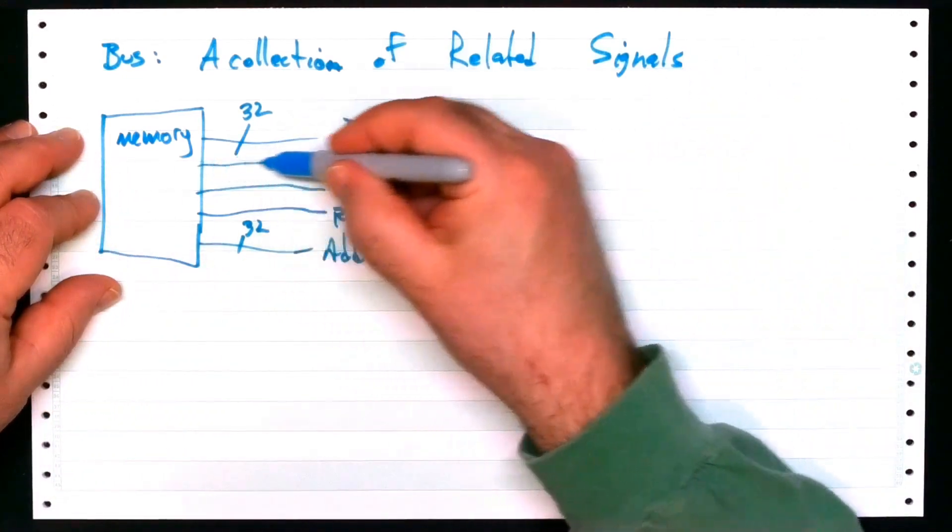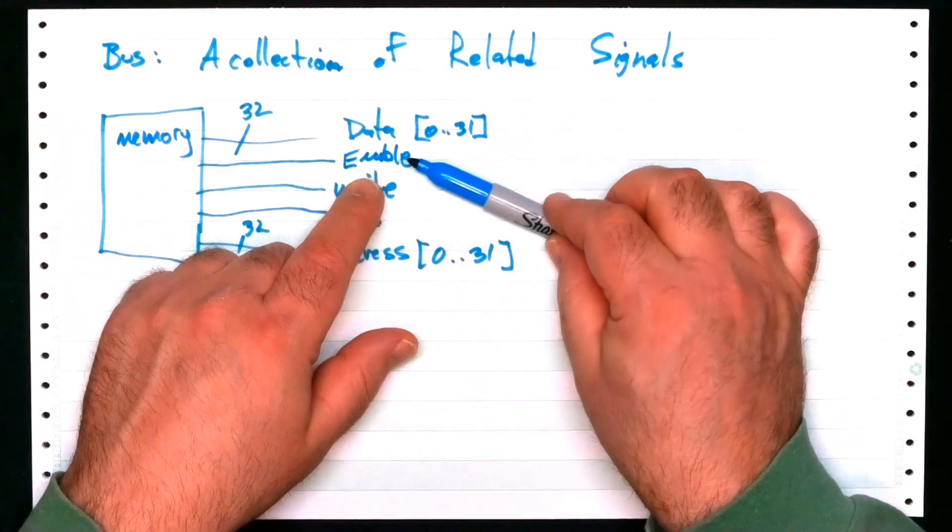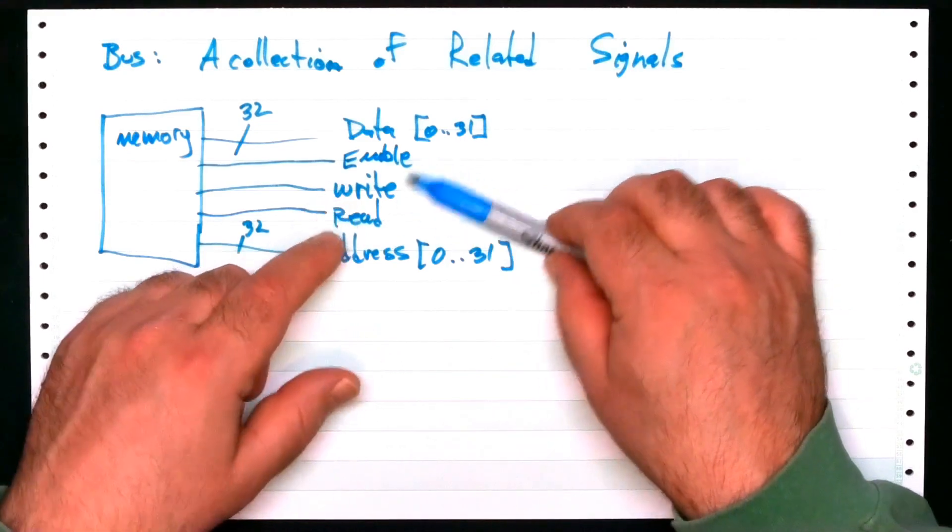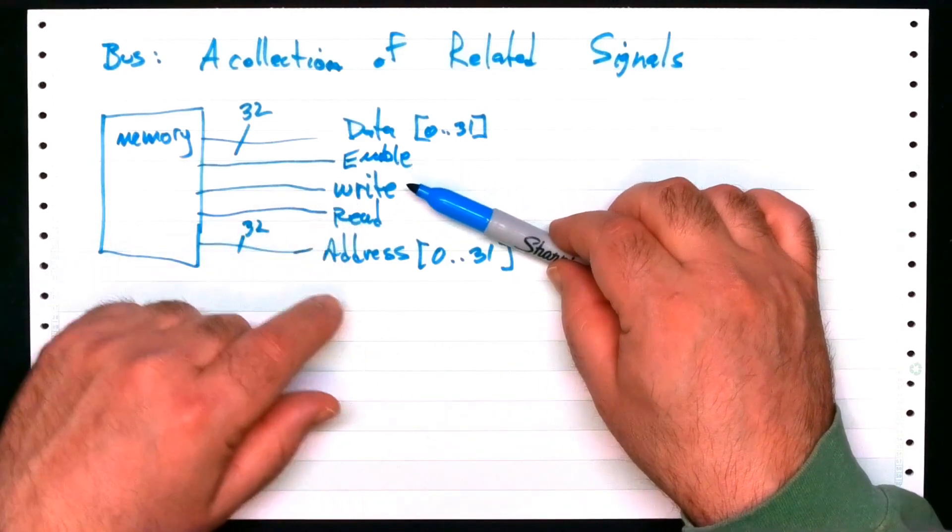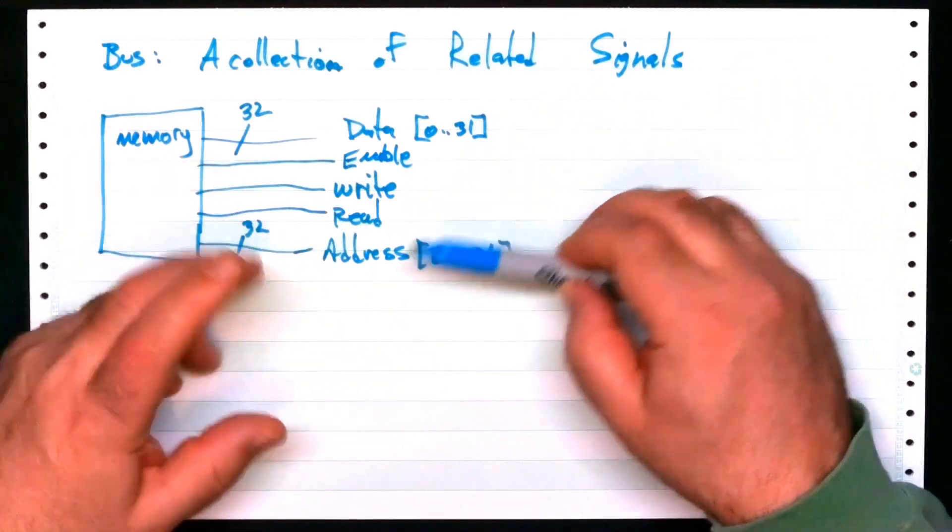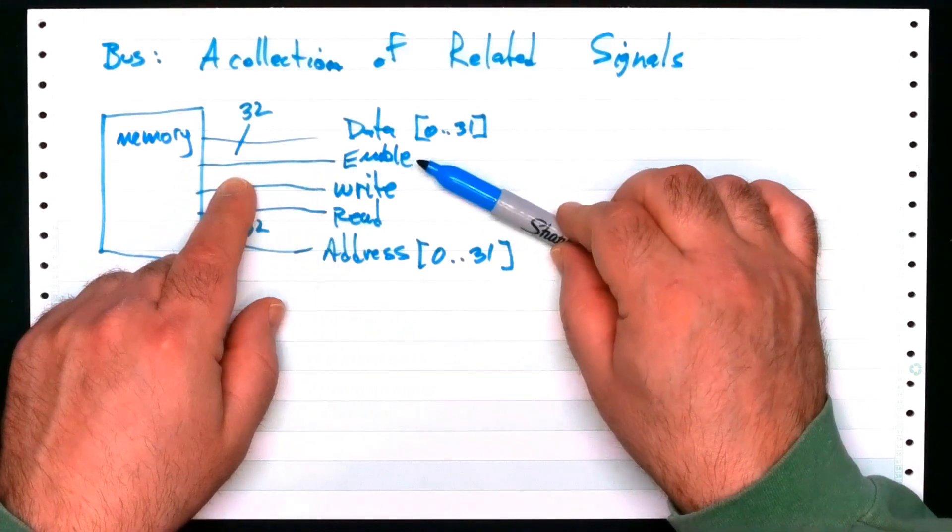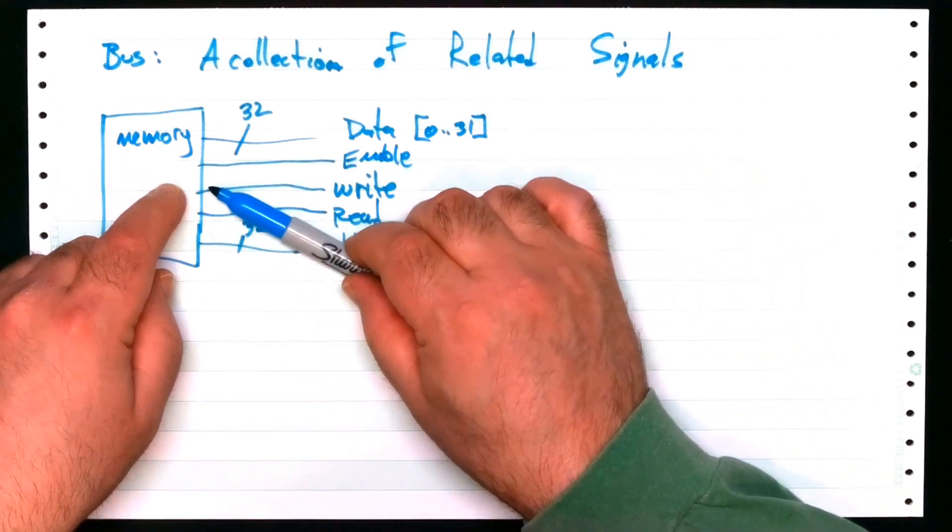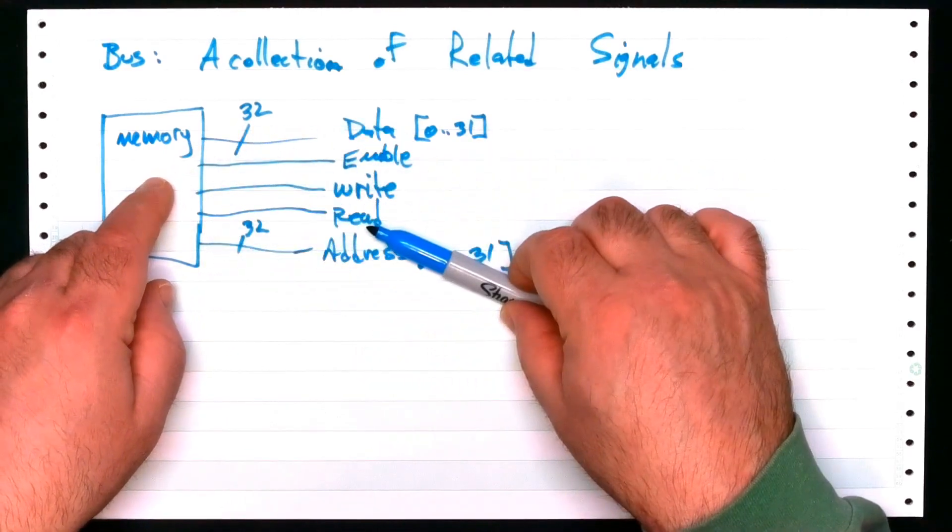Now usually there's also another one called enable. And what this one's for, this is where reality sets in. I'm going to put it on here because we'll see this maybe in a minute. Once you deal with reality, you deal with power consumption and other such things. This enable line, this enable signal, is used to tell the memory to disregard anything and everything on every other one of these signals.